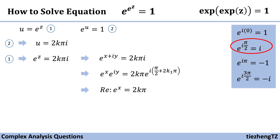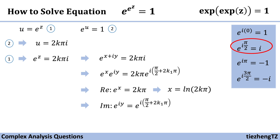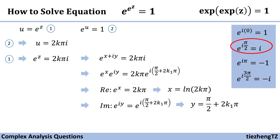For the real part, e^x = 2kπ, so x = ln(2kπ). For the imaginary part, e^(iy) = e^(i(π/2 + 2k₁π)), so y = π/2 + 2k₁π.